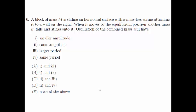When it moves to the equilibrium position, another mass M falls and sticks onto it. Oscillation of the combined mass will have: i) smaller amplitude, ii) same amplitude, iii) larger period, iv) same period. For this question,